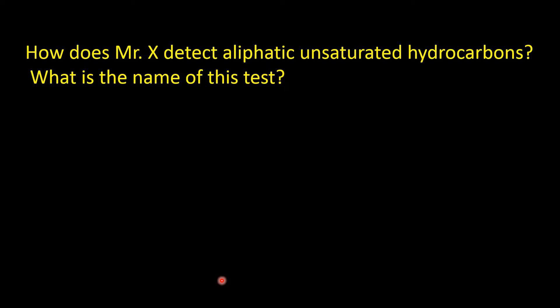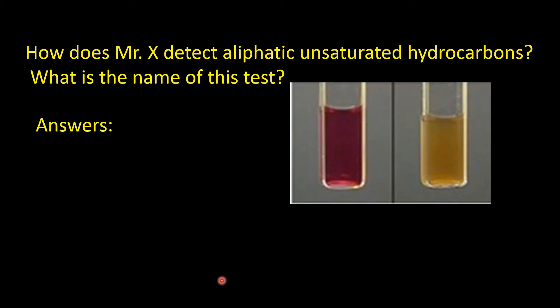Next question: how does Mr. X detect aliphatic unsaturated hydrocarbons, and what is the name of the test? In aliphatic unsaturated hydrocarbons such as alkenes, if you add cold dilute potassium permanganate solution, the pink color of the potassium permanganate solution gets discharged. The pi bonds of the double bond break down, and two OH groups are added to the adjacent carbon atoms joined by the double bond, meaning a vicinal diol is formed.